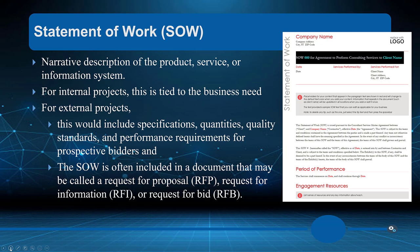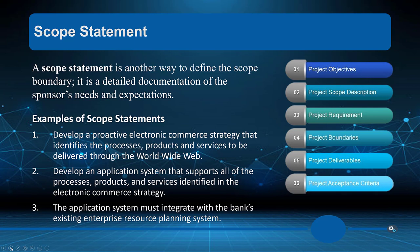For internal projects the SOW is tied to the business need; for external projects it includes specifications and quantities. If we're a consulting firm with an external customer, we need a completed process — receiving a request for proposal, returning a bid, and having it accepted — which means we've created a detailed scope and WBS that we're expected to deliver. This prevents scope creep and avoids adding features that increase our budget outside the customer's expectations. The same discipline applies internally.